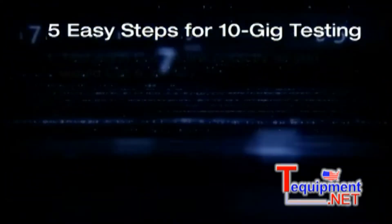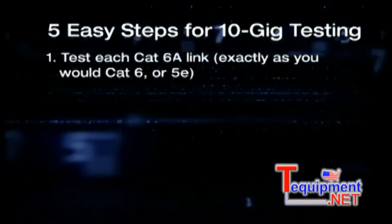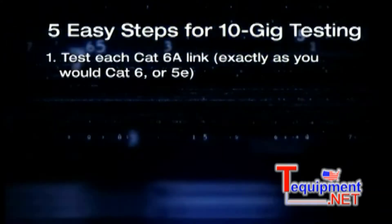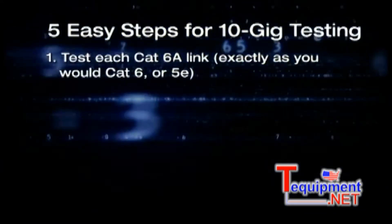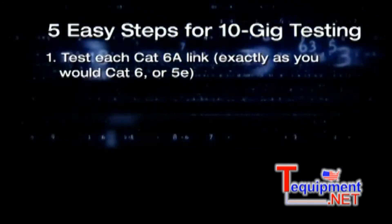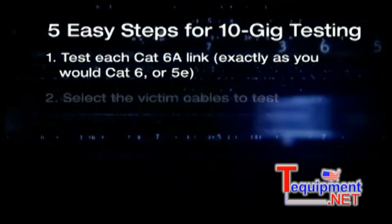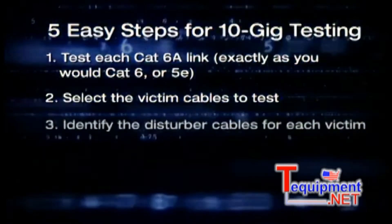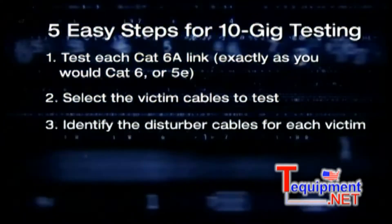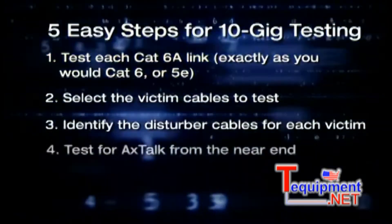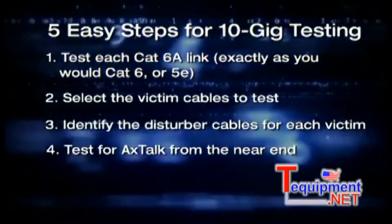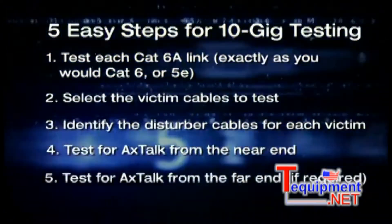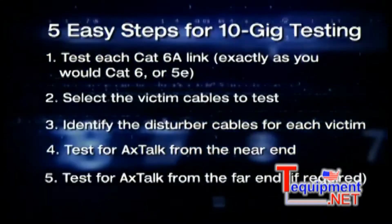Five easy steps for 10 gig testing: Step one, test each CAT 6A link exactly as you would CAT 6 or 5E. Step two, select the victim cables to test. Step three, identify the disturber cables for each victim. Step four, test for alien crosstalk from the near end. Step five, test for alien crosstalk from the far end.